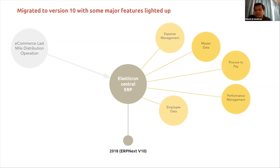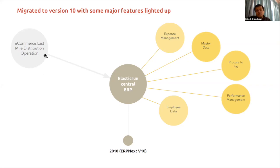We started figuring out gaps and processes to address. With version 10 we added more features: we enabled the procure-to-pay process with complete PO, PR, invoice, and payment workflows. We also established performance management for employee performance. We integrated with our e-commerce business — our first business — by using plain API calls. ERPNext provides doctypes with default CRUD operations as APIs, and our Java-based e-commerce application successfully integrated to push data into the system.